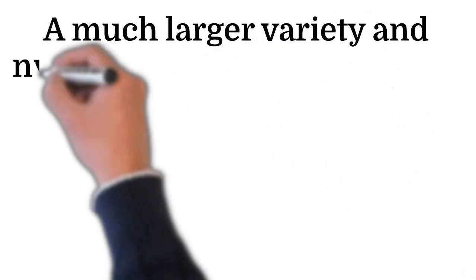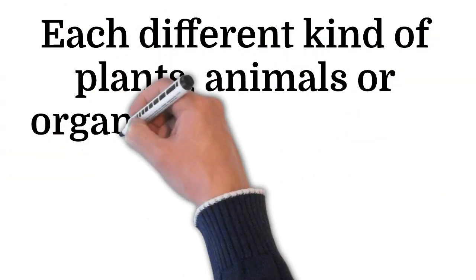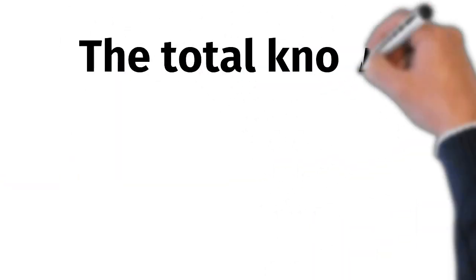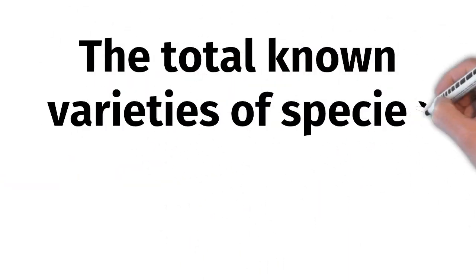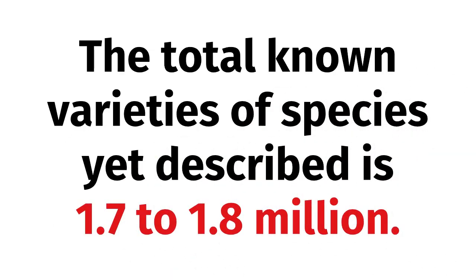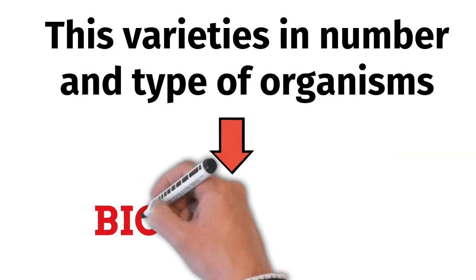A much larger variety and number of plants and animals are found in dense forests. Each different kind of plant, animal or organism that we find represents a species. The total known varieties of species yet described is 1.7 to 1.8 million. This variety in number and type of organisms is what is called as biodiversity.